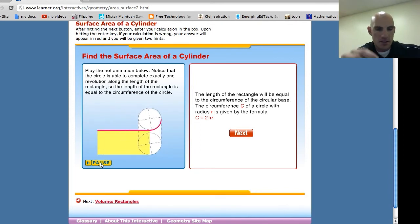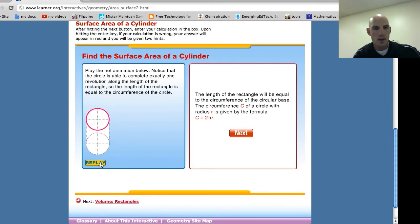Look at what happens. This pink line here becomes the length of the rectangle. And so if I replay this, watch what happens as it rolls out. That pink line becomes the length of the rectangle. And I'm going to pause it and you'll see. So the circumference of the circle is the length of the rectangle, and the height is the height.